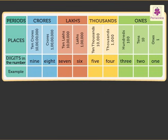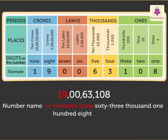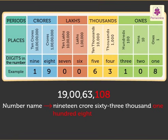Let us try one more example. We write this number as 19,00,63,108. We read this number as nineteen crore sixty-three thousand one hundred eight. Did you notice here we did not read the zeros, but we did write them to show the place value.